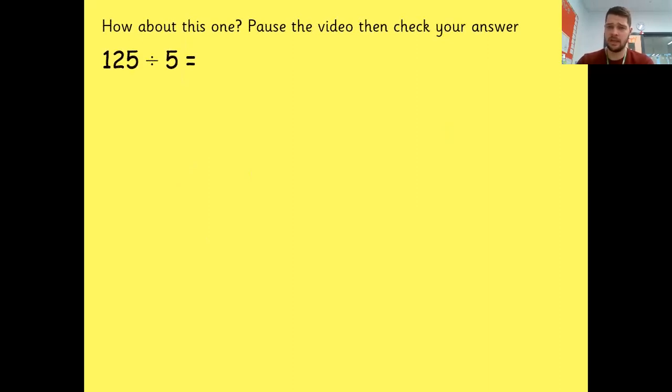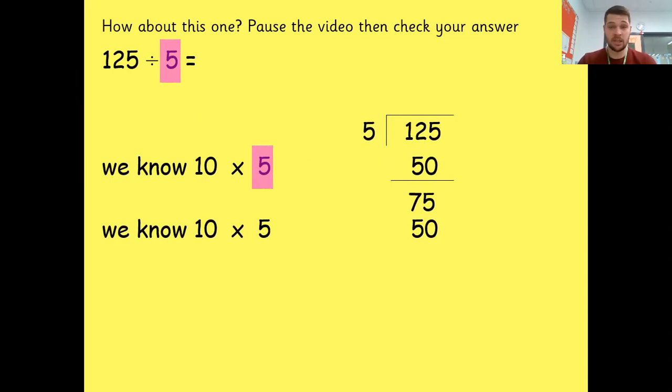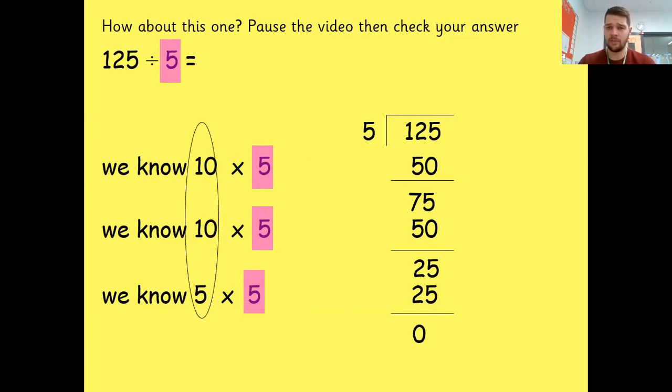Try the same again here. Pause the video, answer the question, and then check your answer when you're ready. Okay, I'm just going to skip through this nice and quick so you can check it. 10 times five is 50, which leaves us 75. I did 10 times five again is 50, which now leaves me 25. And then I know that five groups of five is 25 to get me down to zero. So let's circle how many groups of five I did 10, 10, and five. And we add those up to get 25. 125 divided by five is 25.